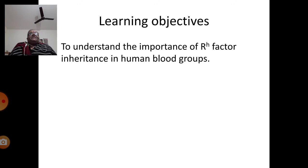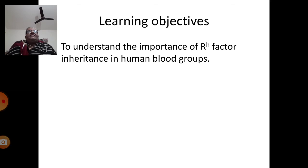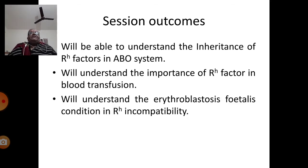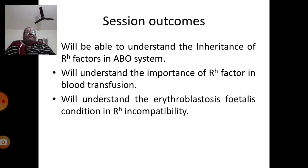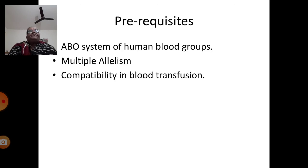The learning objective is to understand the importance of Rh factor and its pattern of inheritance in human blood groups. Once the session is over, we will be able to understand the inheritance of Rh factor in the ABO blood group system, the significance of Rh factor in blood transfusion, and the case of erythroblastosis fetalis — that is, Rh incompatibility.